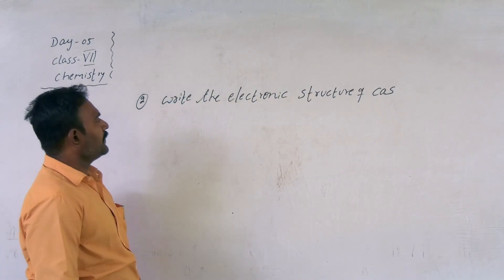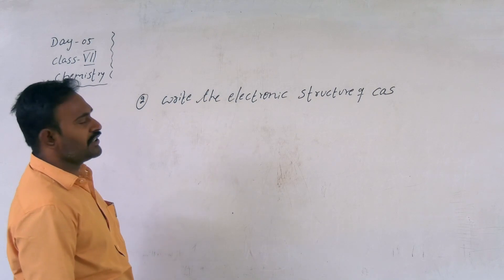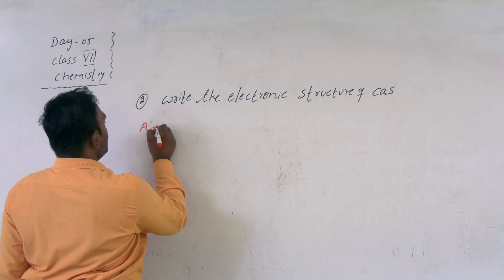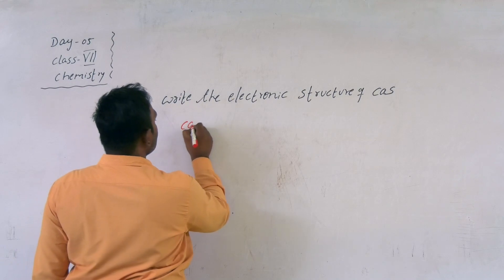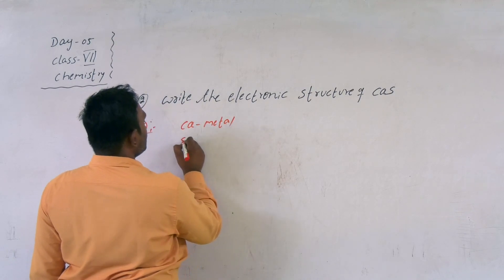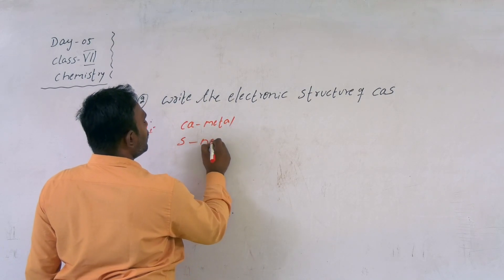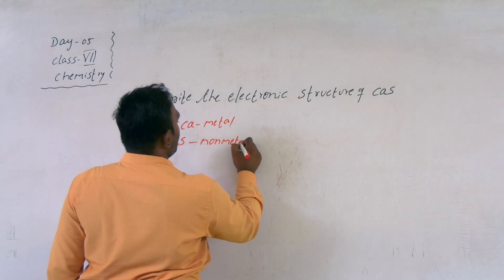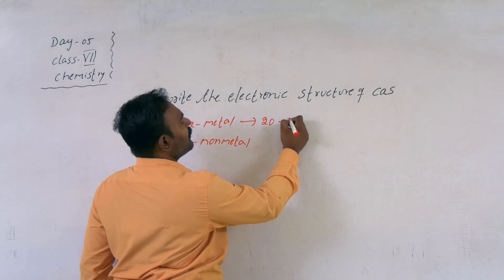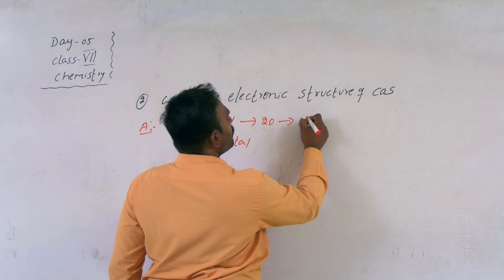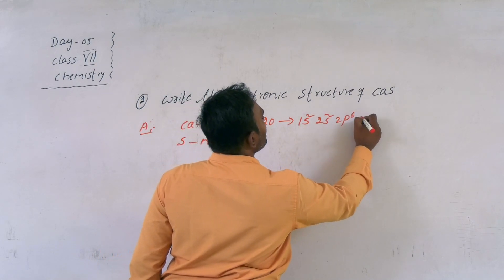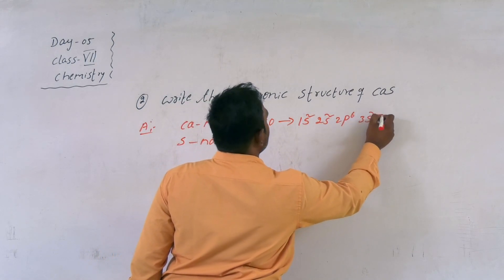The second question is: write the electronic structure of calcium sulfide. An ionic bond is 100% present because calcium is a metal and sulfur is a non-metal. The atomic number of calcium is 20. Configuration: 1s2, 2s2, 2p6, 3s2, 3p6, 4s2.